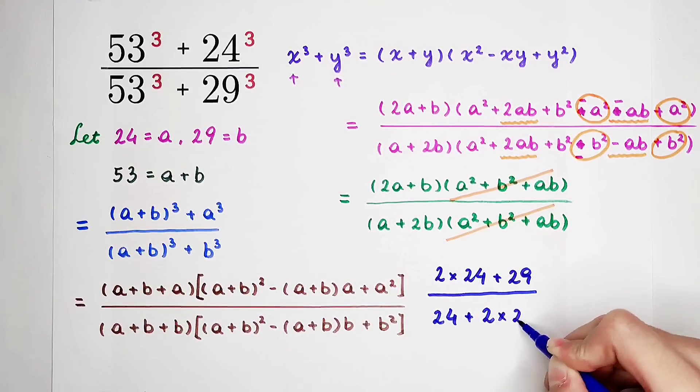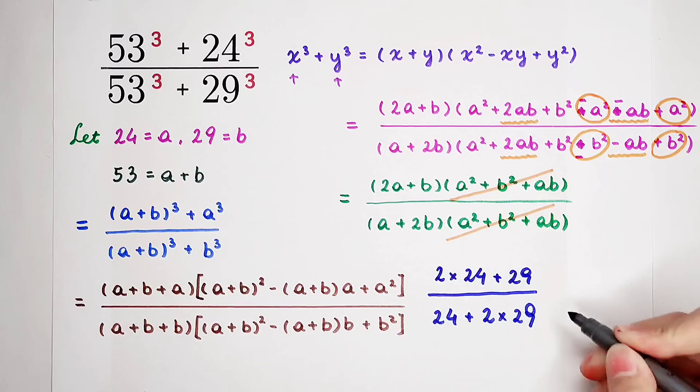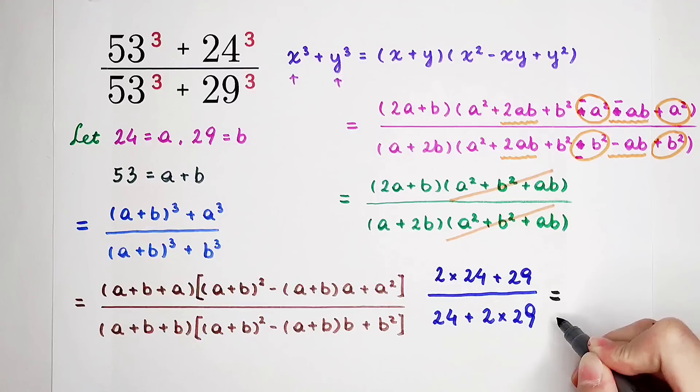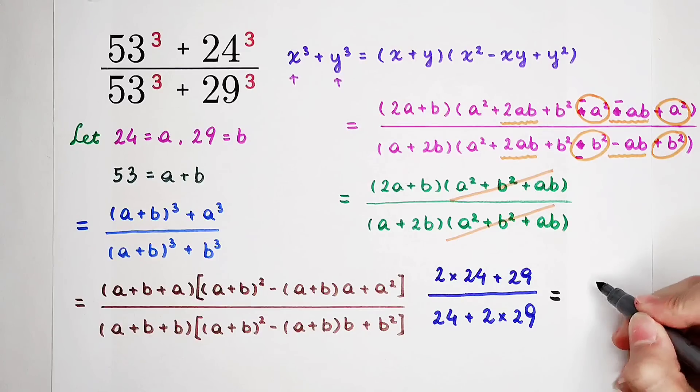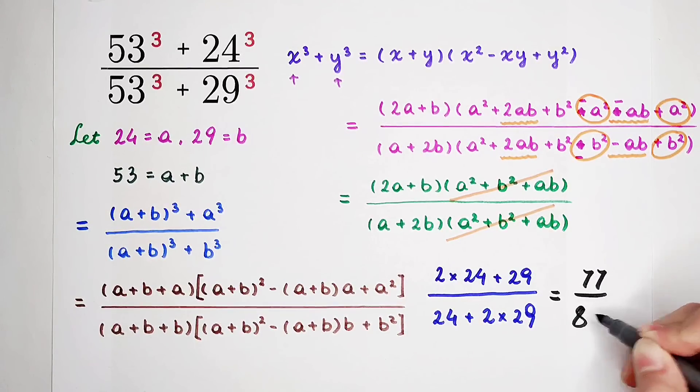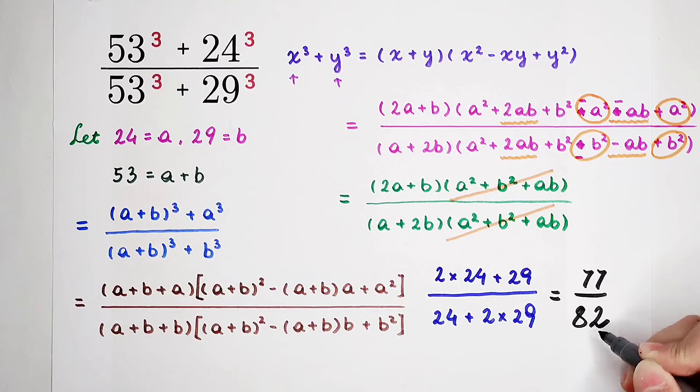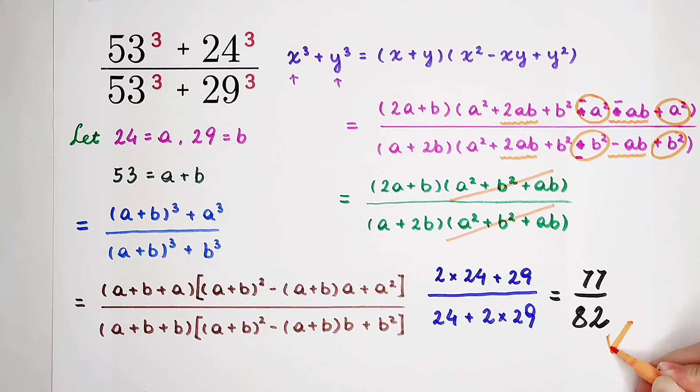So, in the end, what's the value, what's the result, and what's the answer? It is 77 divided by 82. And they are coprime. So, it cannot be simplified anymore. This is the answer.